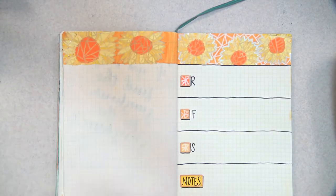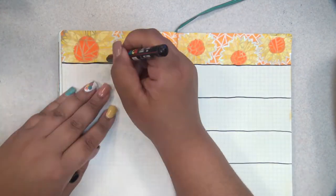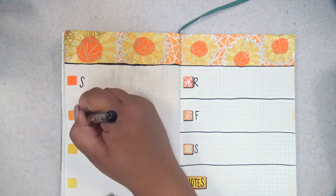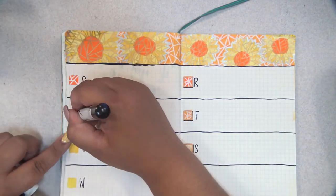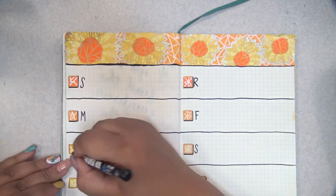I then added a gold border around the little colored boxes with the gold Uni Posca once again, and a drop shadow with the black 1 millimeter.